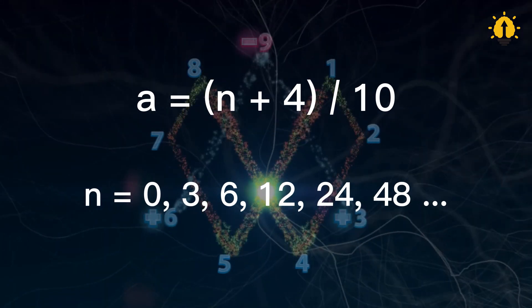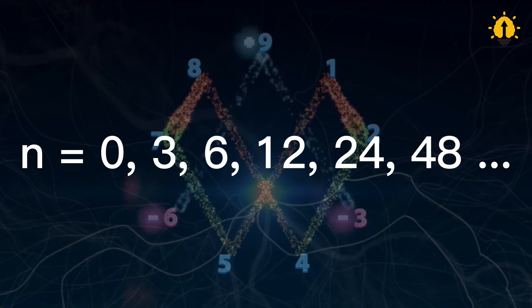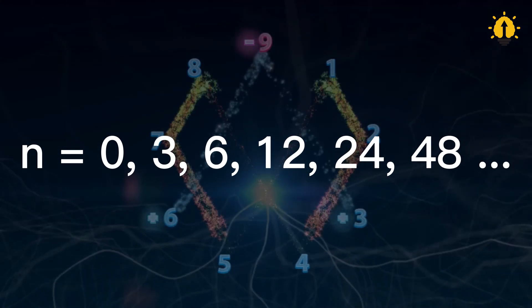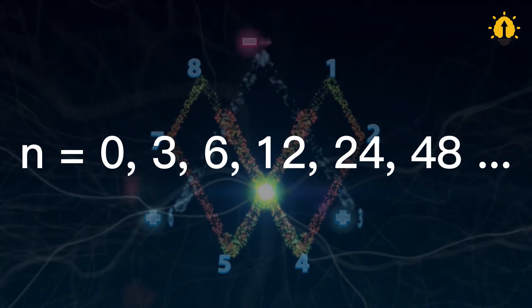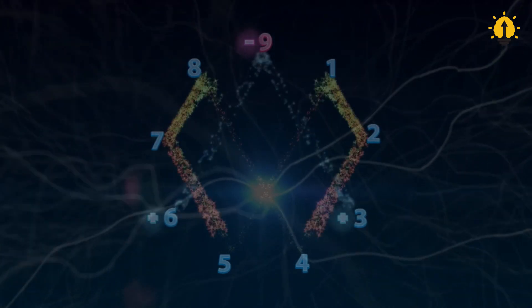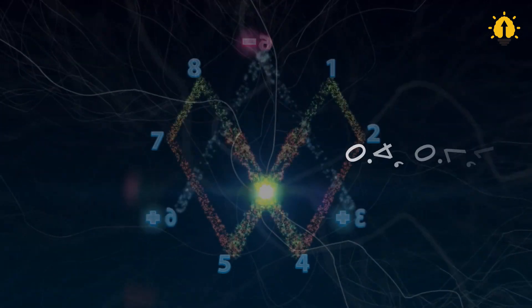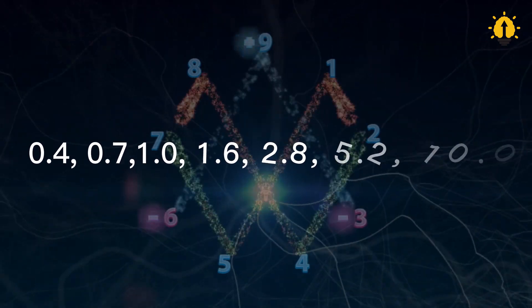Pay close attention, because something strange happens when you plug in the numbers for n. For n greater than or equal to 3, each subsequent number is exactly twice as large as the previous one. Plugging n into the formula yields a sequence of numbers 0.4, 0.7, 1.0, 1.6, 2.8, 5.2, 10.0, 19.6.